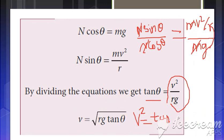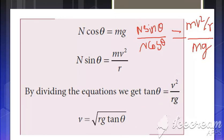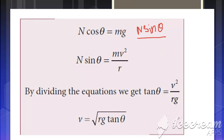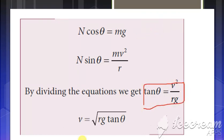This gives a necessary condition for any particle to move on the circular path. There are two conditions: the first condition is tan theta equals v squared over rg, and the next condition is v equals the square root of rg tan theta. Thank you.